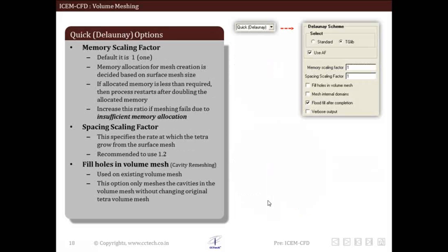We will continue to discuss different inputs required for the quick Delaunay scheme. First is the memory scaling factor, which is given as a value input. Memory allocated for mesh creation is decided based on the surface mesh size. If the meshing process fails due to shortage of memory, the process restarts after doubling the allocated memory — this will be done thrice before the process is terminated permanently, meaning in total 8 times the memory is allocated before termination. If meshing still fails, the user can increase the memory scaling factor so that more memory is allocated and meshing can proceed.